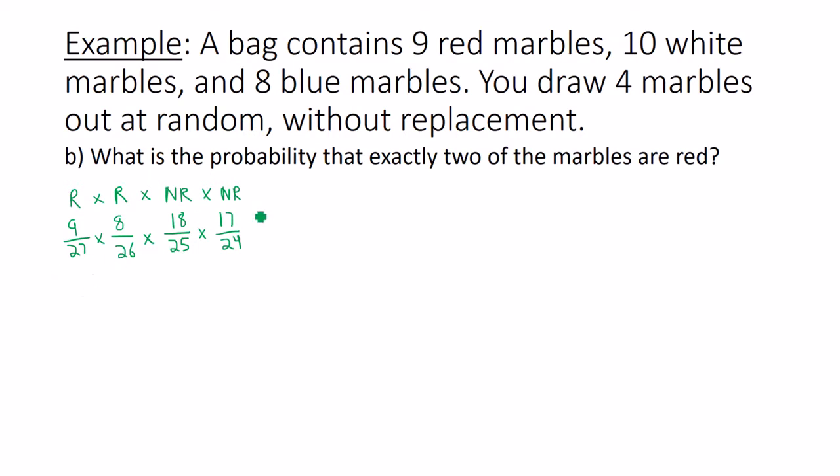So you can multiply together your fractions, or you can simplify. 9 over 27 is 1 third. 8 over 26 is 4 thirteenths. 18 over 25 does not simplify, neither does 17 over 24. Multiply the numerators together, 4 times 18 times 17 is 1,224. Multiply the denominators together, 3 times 13 times 25 times 24 is 23,400.